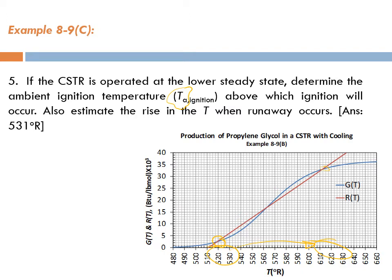The feed temperature is under control at 52.5°F and will stay there. We are using a river for cooling at 50°F. We are not sure if the river will stay at 50°F — the ambient temperature may go up, reducing our ability to remove heat, causing the reactor temperature to rise until we lose the lower steady state and jump to the upper steady state, meaning ignition happens.